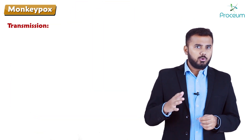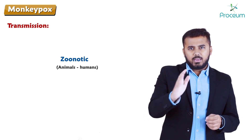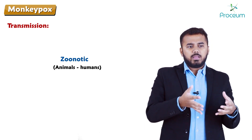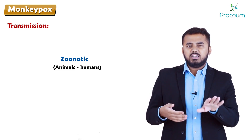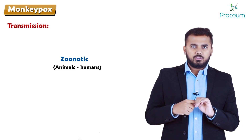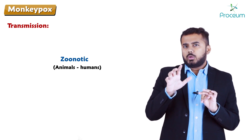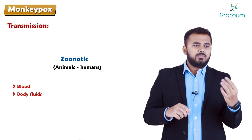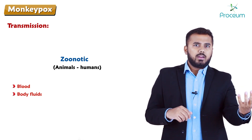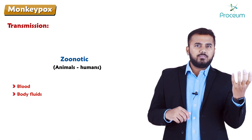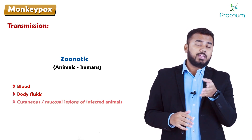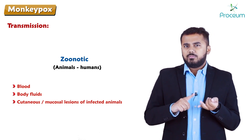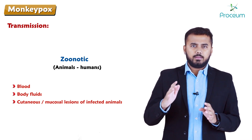Monkeypox is a zoonotic infection transmitted from animals to humans. Transmission can occur through direct contact with lesions of an infected animal, through blood, through body fluids of an infected animal, or through cutaneous and mucosal lesions. Body fluids, blood, and cutaneous and mucosal lesions are the main routes of transmission.